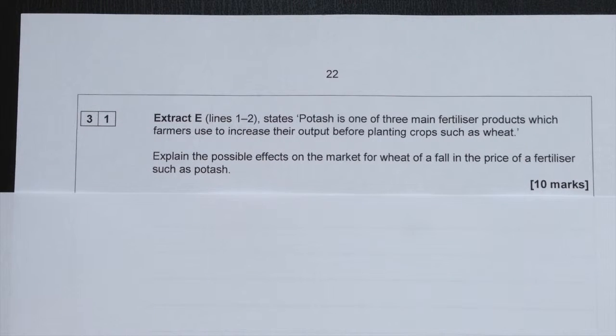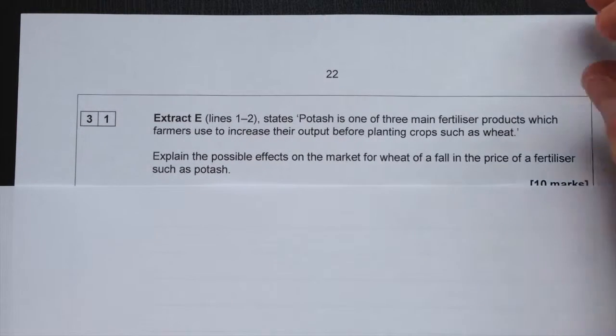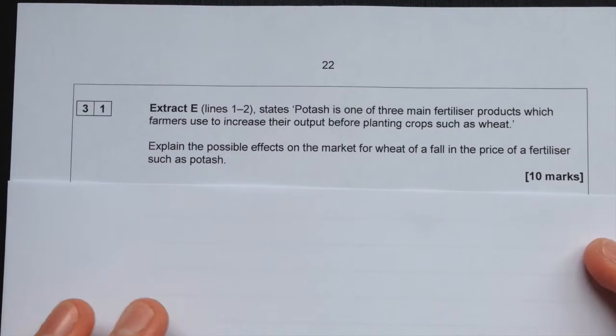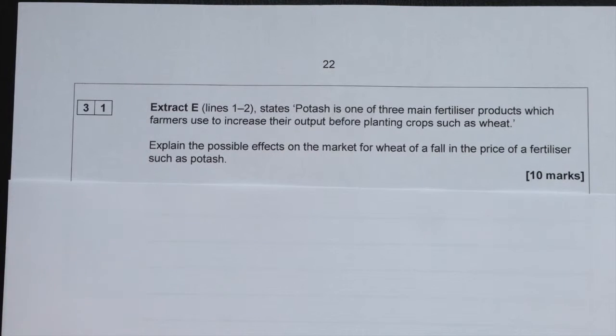Now we can look at question 31, Extract E, lines 1 and 2. It states: Potash is one of three main fertilizer products which farmers use to increase their output before planting crops such as wheat. Explain the possible effect on the market for wheat of a fall in the price of a fertilizer such as potash.